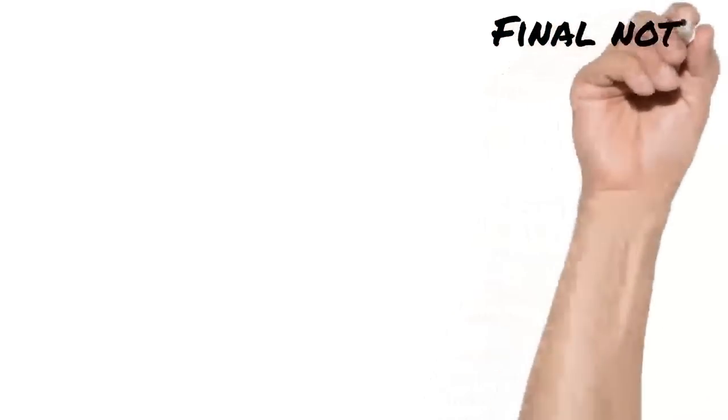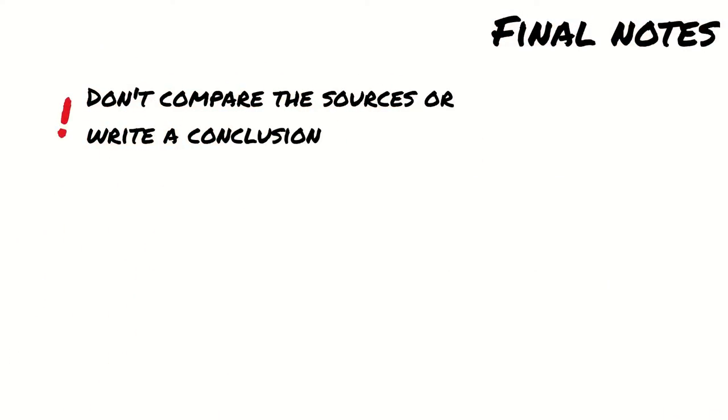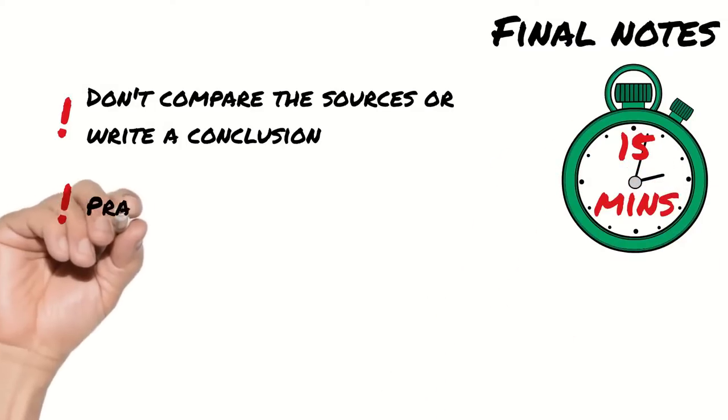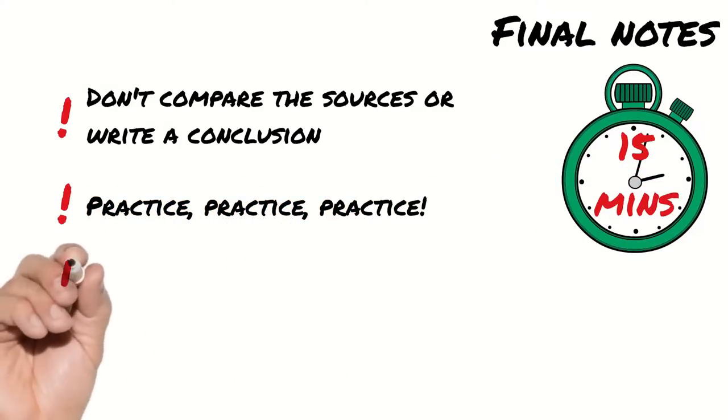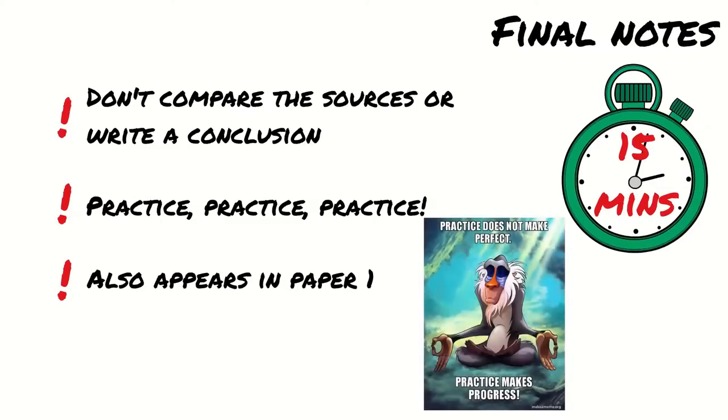A couple of last things to point out about this question. Firstly, you don't need to compare the sources or write a conclusion. Each source needs its own paragraph and needs to be dealt with separately. Most importantly, this question is really limited in the amount of time you have to do it in. So you should practice this question as much as you can, especially as it also appears in paper 1. This way you will train yourself to think about the sources critically and you will speed up as you get more practice. Ok, that is everything you need to know about question 3a on paper 3. Don't forget that there are worksheets and my contact details in the description if you have any questions. Now for a quick word from my other half and I will see you next time.